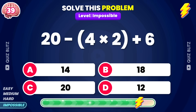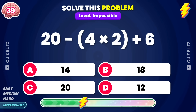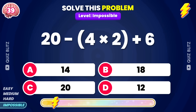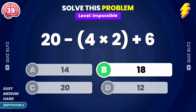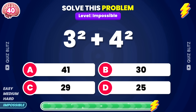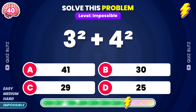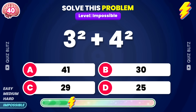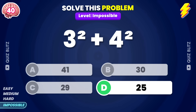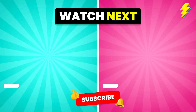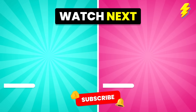What's the result of 20 minus 4 times 2 plus 6? The answer is 18. 3 squared plus 4 squared. The answer is 25. Pick your next challenge and make sure to like and subscribe! Thank you!